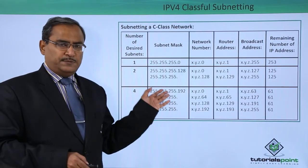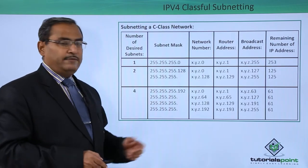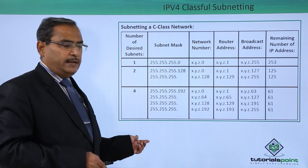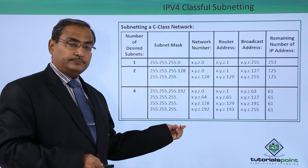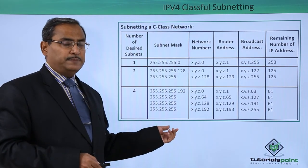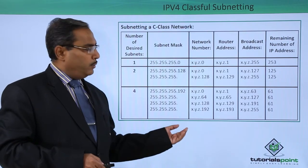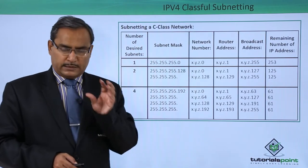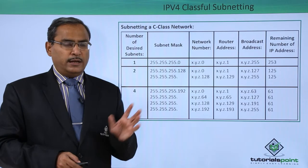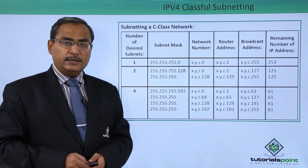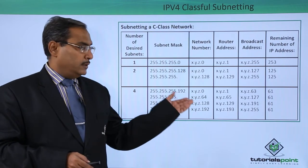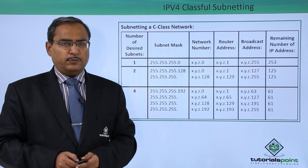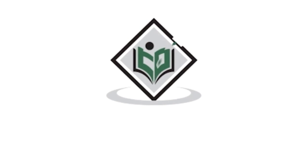In this way, classful subnetting for Class C IPv4 addresses can be done. You can also go for 8 subnets — in that case, 3 bits will be taken for subnet numbering and the remaining 5 bits will go for the host ID. Do some practice on these subnetting techniques, solve some numerical problems, and you will gain confidence. Thanks for watching this video — tutorialspoint.com, simply easy learning.